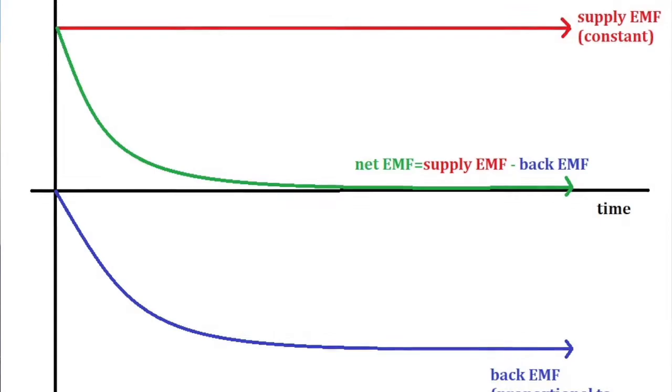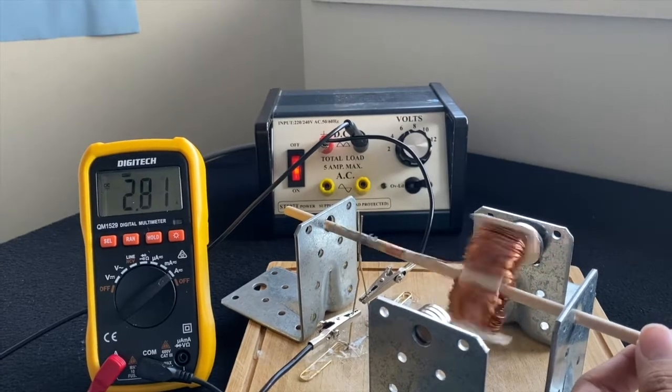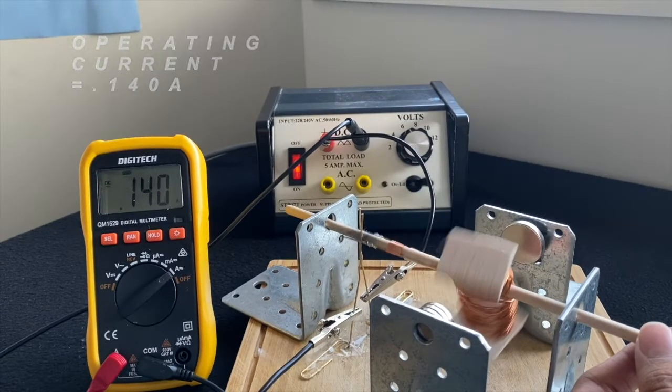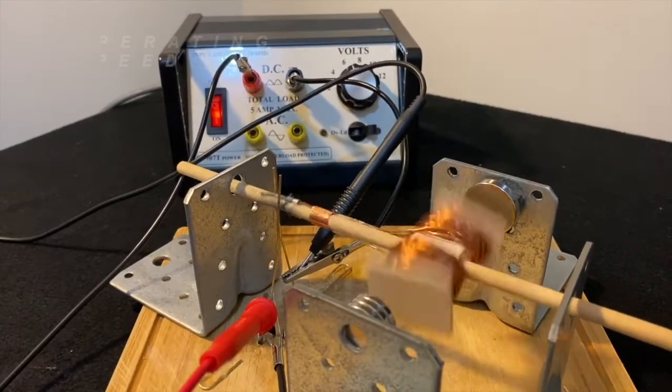When the magnitude of the back EMF is equivalent to the source EMF, the current running through the coil, which is ideally zero, is called the operating current, and the speed of the motor at this point is called the operating speed.